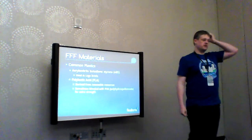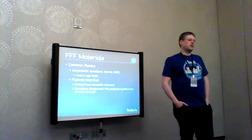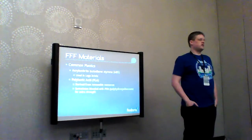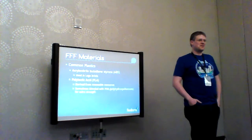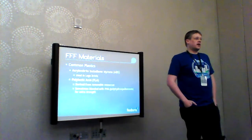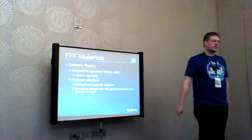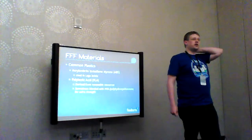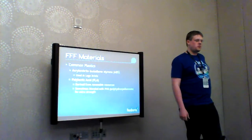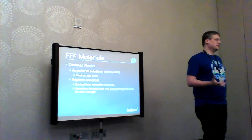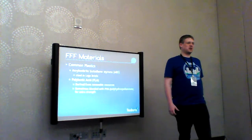There are a couple of common materials for FFF printing. Acrylonitrile butadiene styrene — ABS — is most familiar because it's the plastic used to make Legos. It requires a high nozzle temperature of about 230 degrees Celsius and usually a heated bed for good adhesion on the first layers. The downside of ABS is that it's not very environmentally friendly. It smells like burning cancer when you're printing with it — you're not going to fool anybody.